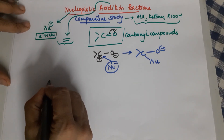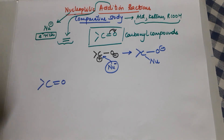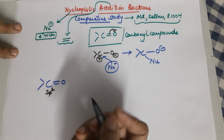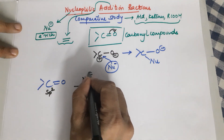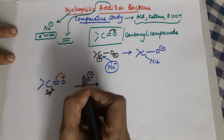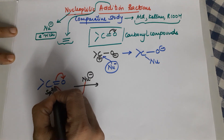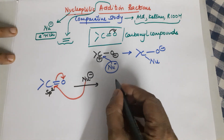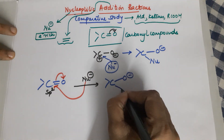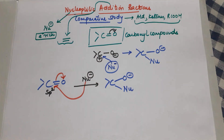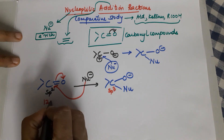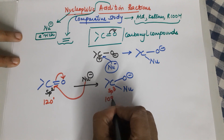If you carefully look, the carbonyl carbon was initially an sp2 carbon because of the presence of a pi bond. When a nucleophile attacks it, due to this pi bond, the carbon has a positive charge. The nucleophile then attacks this carbon, leading to a new bonded unit.